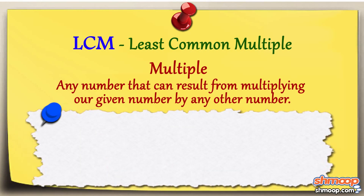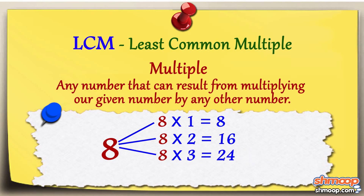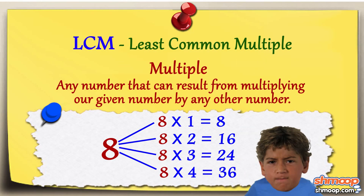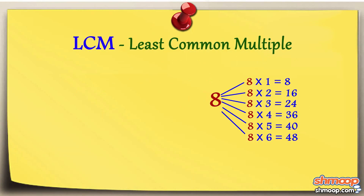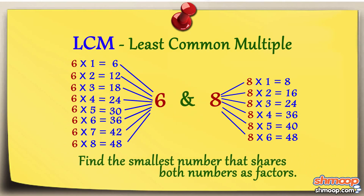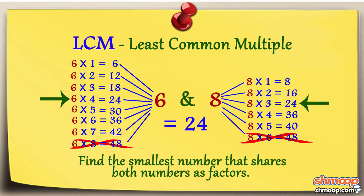If you want to find the multiples of 8, you can multiply 8 by 1 to get 8, by 2 to get 16, and by 3 to get 24. If you want to find the least common multiple of 6 and 8, you need to find the smallest number that shares both numbers as factors. As you can see, it's unfortunately not as easy as merely multiplying the numbers together.